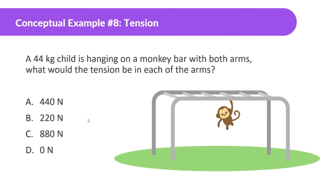A 44kg child is hanging on a monkey bar with both arms. What would be the tension in each arm? This monkey is holding this with two arms right here. If he's holding it with two arms, we know that the force of gravity on the monkey is equal to 440 newtons. However, the force of tension is going to be distributed — some of it goes in this arm and some in this arm.